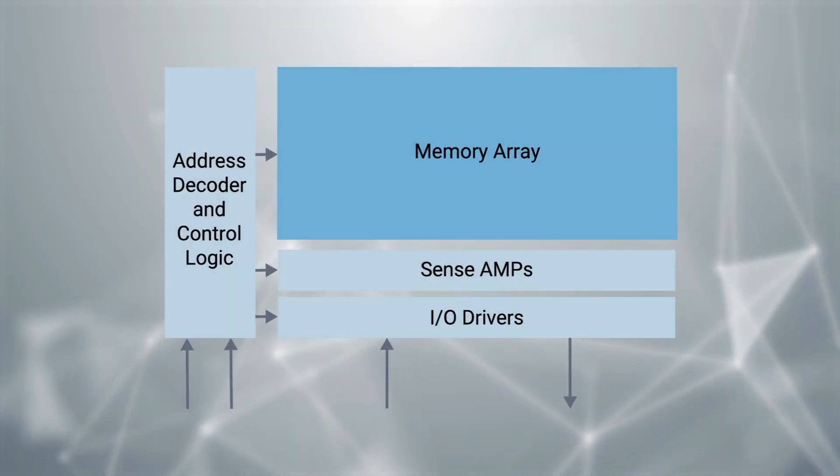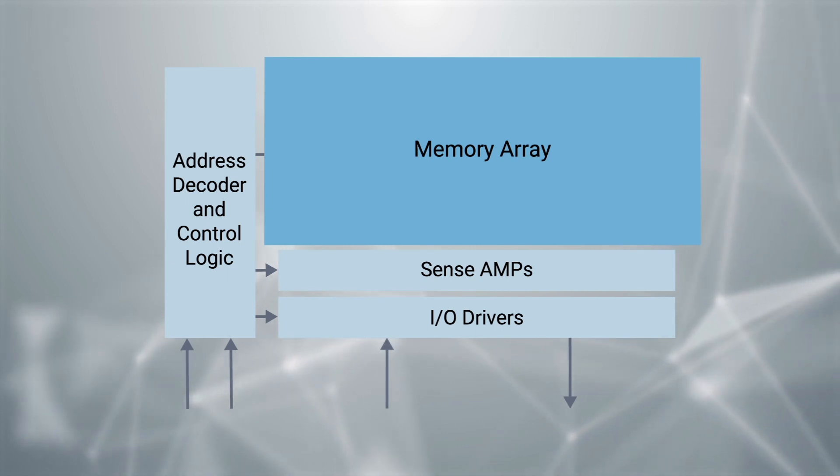The heart of an SRAM is the memory array made up of millions of bit cells, the basic building blocks that store data in the form of a zero or a one.